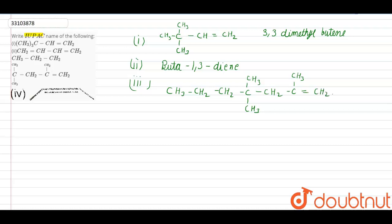So, the naming of this compound, first start numbering from this side, 1, 2, 3, 4, 5, 6, 7. So, the naming of this compound, first start numbering from this side, 1, 2, 3, 4, 5, 6, 7.